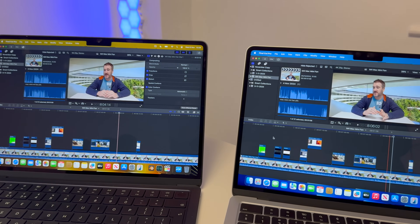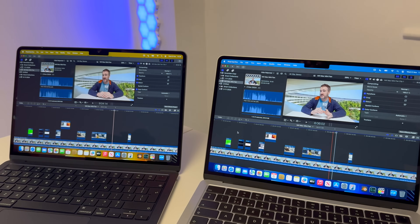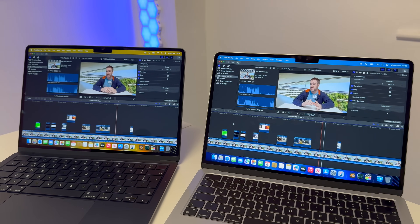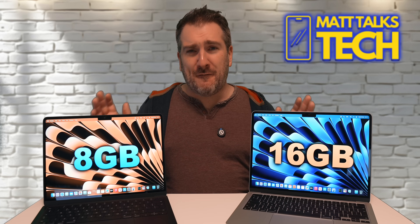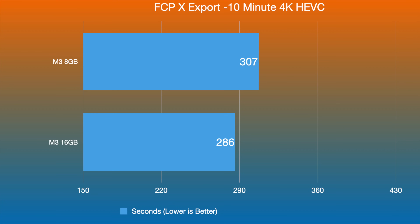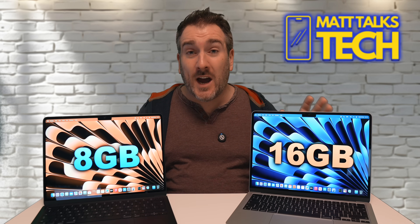Now let's test Final Cut Pro — exporting the same 4K video on both machines. This is a video I made recently about the Mac Mini M4. For the first time we're actually seeing a clear difference: the 8GB model completed the export in 307 seconds, while the 16GB model did it in 286 seconds. The extra RAM definitely helped here.